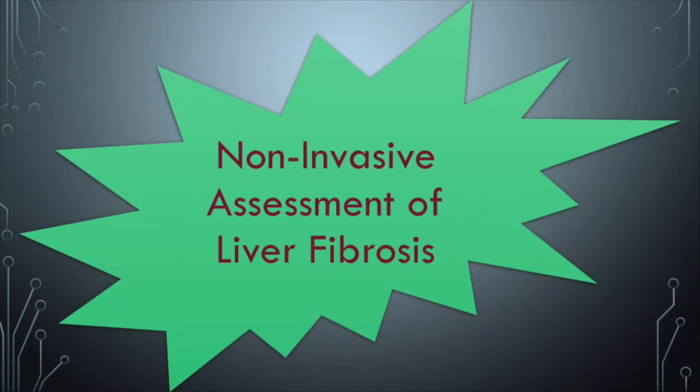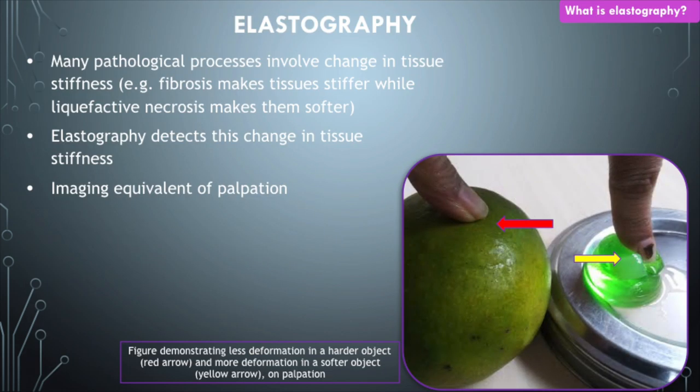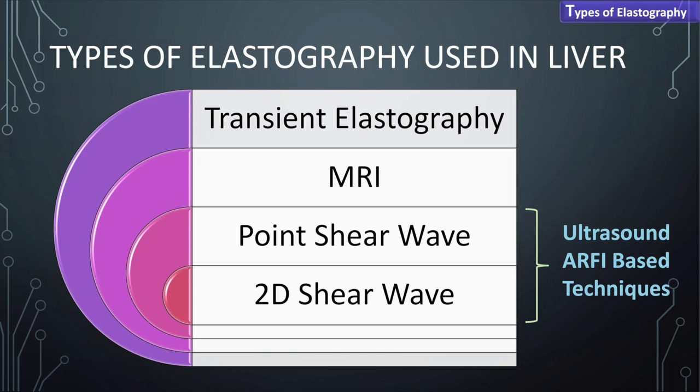What we really need is a non-invasive tool that can give us good assessment of liver fibrosis — easy to use, reproducible, and usable as a screening modality. This is where elastography comes in. Elastography for all practical purposes is like an imaging equivalent of palpation — we're assessing whether the pathology has made the tissues harder or softer. There are different types of elastography for the liver: transient elastography (popularly called Fibroscan), MRI elastography, and ultrasound-based techniques — point shear wave and 2D shear wave.